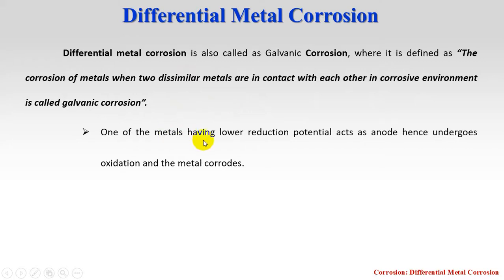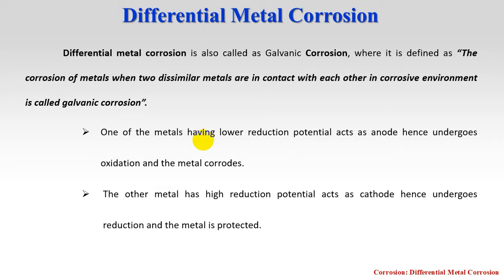The metal having a lower reduction potential acts as the anode, and hence undergoes oxidation — the metal corrodes. The other metal, which has a higher reduction potential value, acts as the cathode, undergoes reduction, and is therefore protected from corrosion.